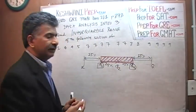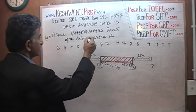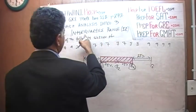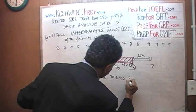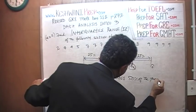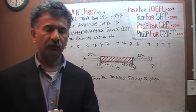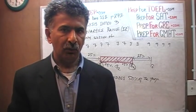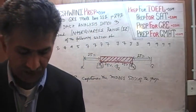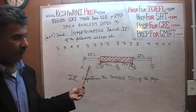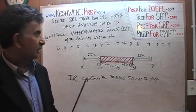Instead of taking the difference between the two extremes, the interquartile range takes the difference of Q1 and Q3 — the range in the middle. This is what is known as the interquartile range, abbreviated IQR. The interquartile range captures the middle 50% of the population. So if your teacher says you are in the interquartile range, you are neither in the bottom 25% nor the top 25% — you are in the middle 50%.